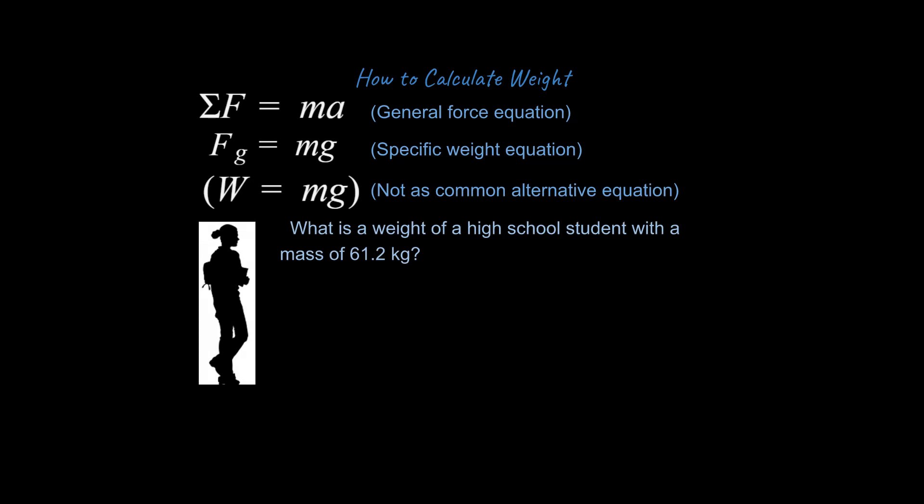So let's take a look at this problem. What is the weight of a high school student with a mass of 61.2 kilograms? Think about how you would set up this problem. Hopefully you're able to come up with the idea that we start by writing down that equation, the force due to gravity equation, and we just plug in our values. We end up solving and it turns out to be 600 Newtons. That is the weight of this student. Notice kilograms and Newtons are not the same thing. Mass goes into the calculation for the force due to gravity.